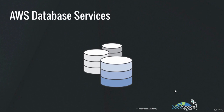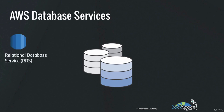Welcome back to Backspace Academy. In this lecture, we'll look at the different options for running databases on AWS. The Relational Database Service, or RDS, is a fully managed database service that makes it easy to launch and scale database servers in the AWS cloud. RDS can launch servers for MySQL — including MariaDB and Amazon's own enterprise version, Amazon Aurora — standard PostgreSQL, Amazon Aurora PostgreSQL, Microsoft SQL Server, and Oracle.